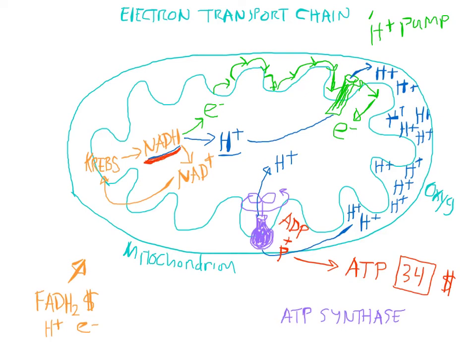The electrons are pulled into the inner space by oxygen. Oxygen gas diffuses into the cell and then into the inner space of the mitochondrion. Oxygen is considered to be the final electron acceptor. Oxygen is reduced in this process, and it combines with hydrogen ions to form one of the outputs of respiration, which is water — H2O.